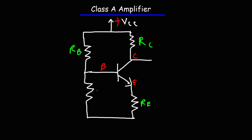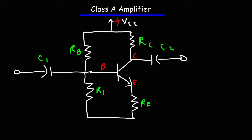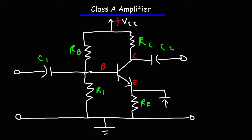And then typically, there's another resistor, which we'll call R1. RB and R1 form a voltage divider. Now the capacitors C1 and C2 are coupling capacitors. They're used to block DC, but they will pass an AC signal. And then we have the ground. And then typically, you'll find connected across the emitter resistor is a bypass capacitor. It allows the AC signal to bypass the emitter resistor, thus increasing the voltage gain of this circuit.